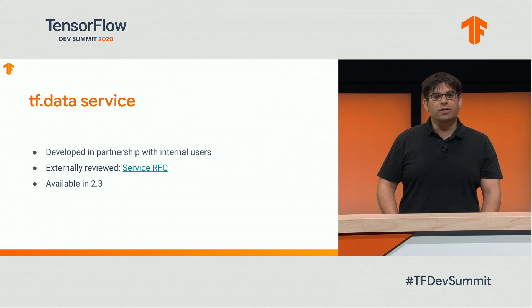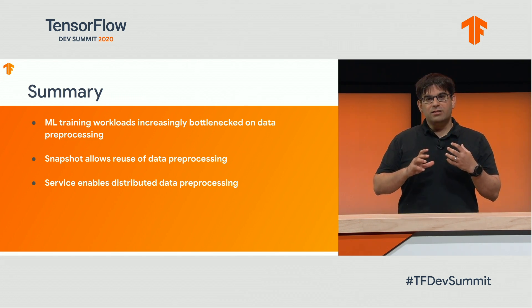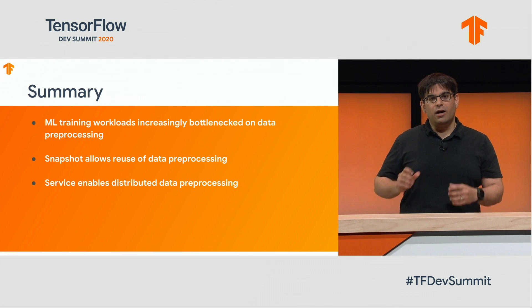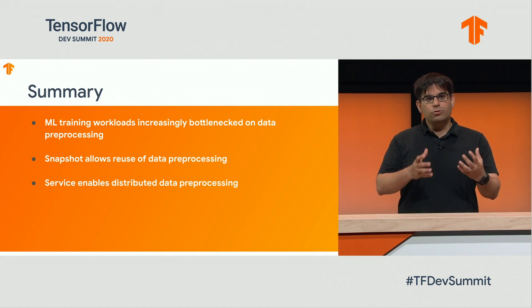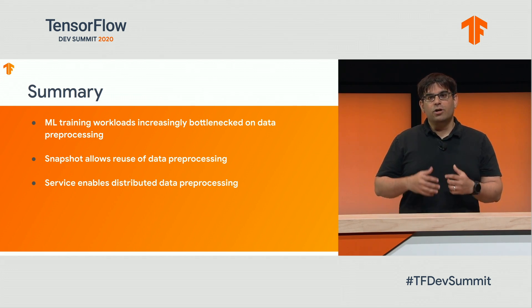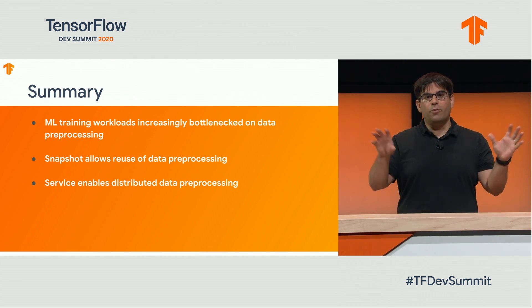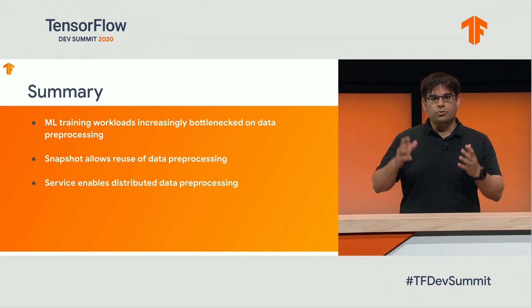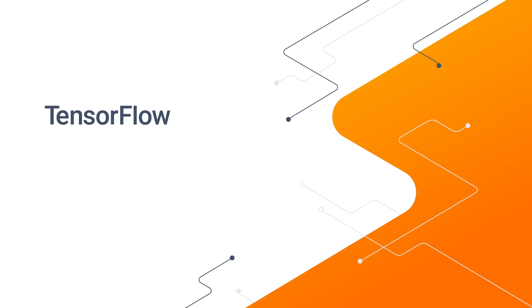To summarize: due to trends in hardware and software, many ML training jobs are getting bottlenecked on input preprocessing. I've talked about two solutions the TF data team has been working on. First is snapshot, which allows you to reuse your preprocessing so you don't have to do it multiple times. Second is TF data service, which allows you to distribute computation to a cluster for the scale-up you need. I hope you play around with these and give us feedback. Thank you for your time.